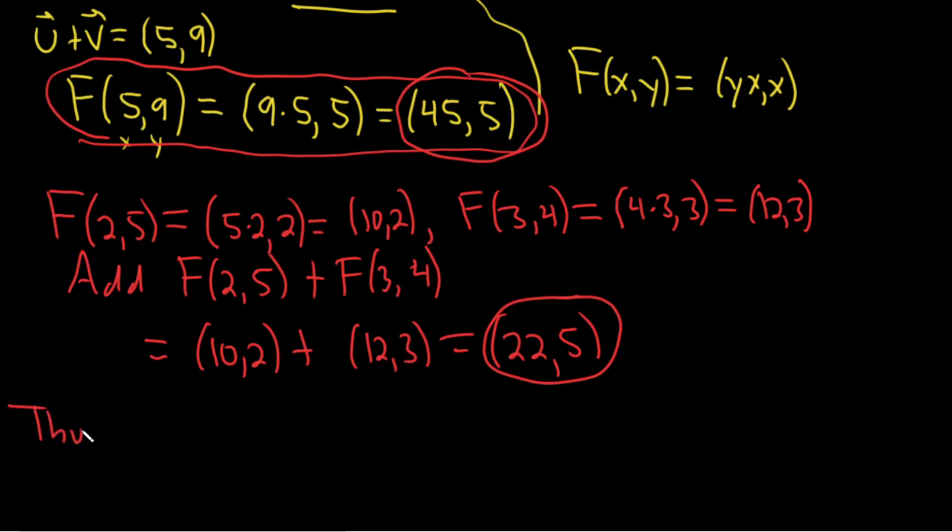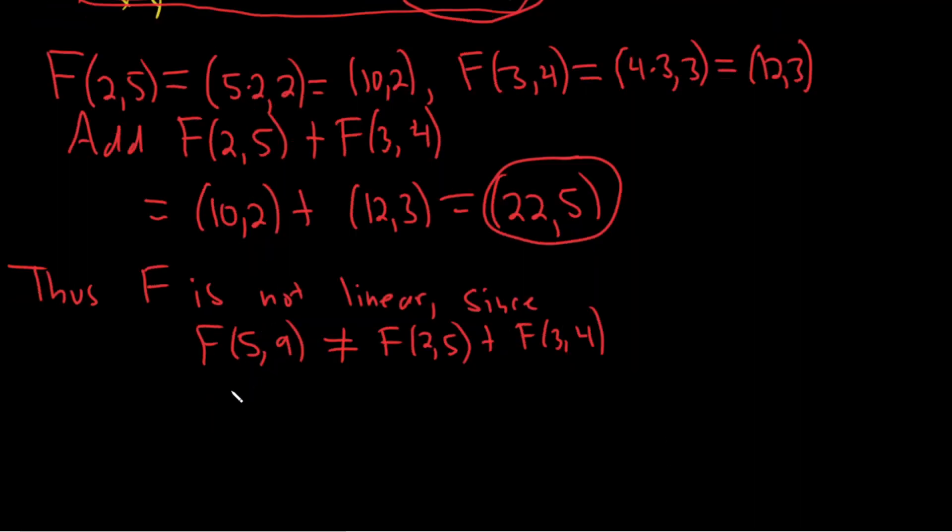So thus, f is not linear. And let me just specify why, basically, since when we take F of this vector, so F of 5, 9 is not equal to F of 2, 5 plus F of 3, 4. And what does this translate to? This is the same thing as saying F of u plus v is not equal to F of u, plus F of v. So it's certainly not a linear transformation. All you need to do is find one example where it fails.